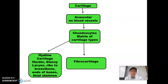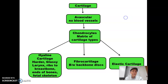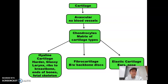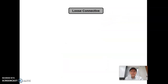Then we have fibrocartilage, which has a bunch of fibers in it. It allows your backbone — that's where you find it mostly, between the backbone discs — to be tough and very stringy, but they also allow some flexibility so that you can bend your body. And finally, elastic cartilage, which is in your nose and in your ears — very floppy, not nearly as hard, not as many fibers in it. It's basically just cartilage material.